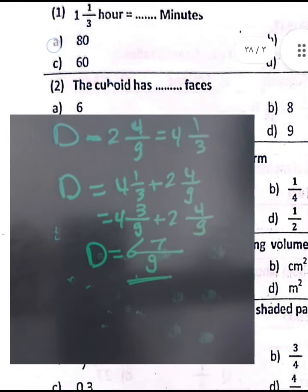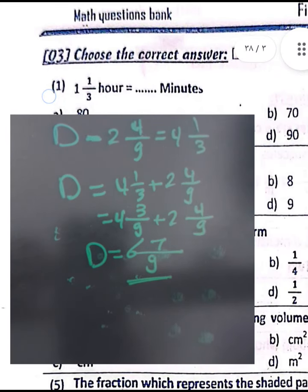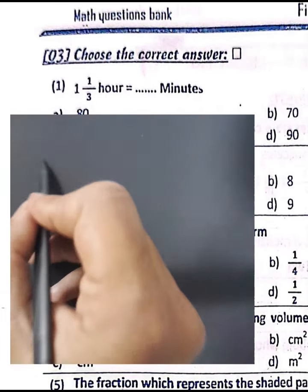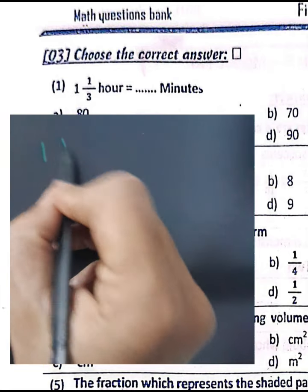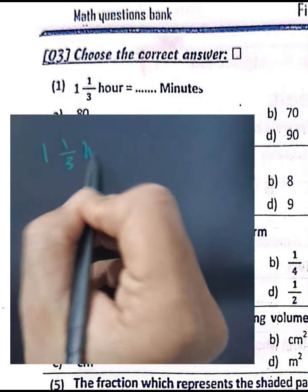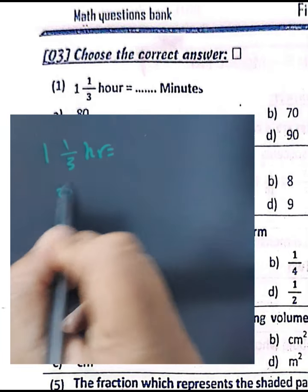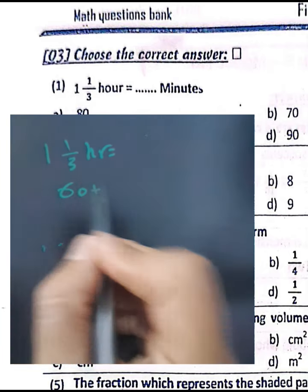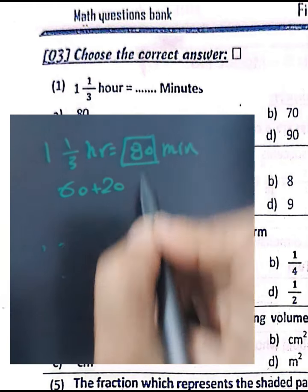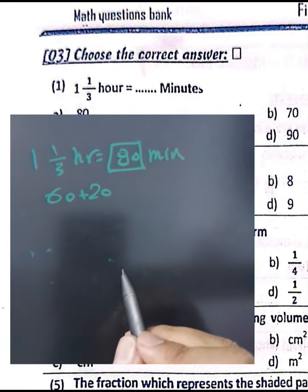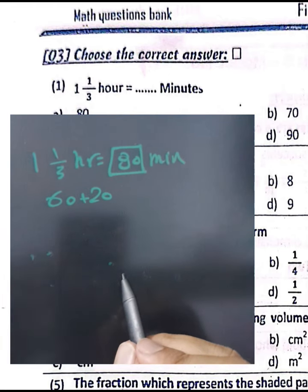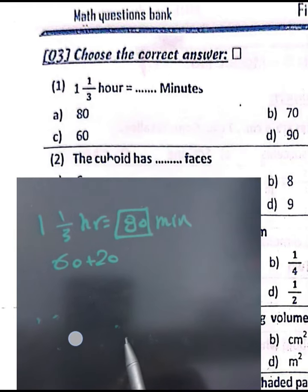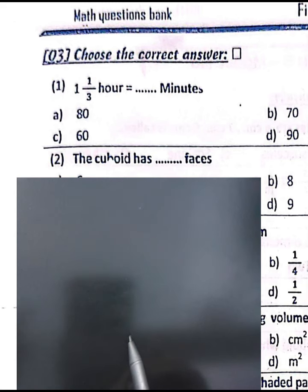Question number one: convert one and one-third hours to minutes. One hour equals 60 minutes. One-third of an hour equals 20 minutes. So one and one-third hours equals 60 plus 20, which equals 80 minutes.